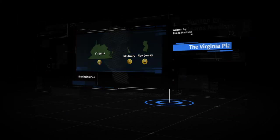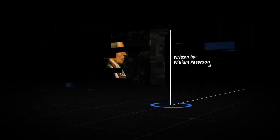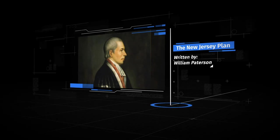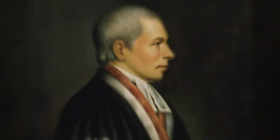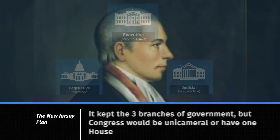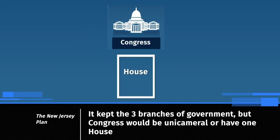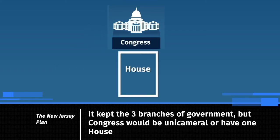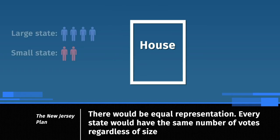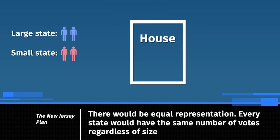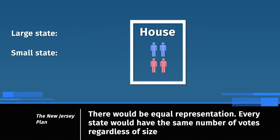Two weeks after the Virginia Plan was presented, William Patterson presented the New Jersey Plan. This plan kept the three branches of government but said Congress would be unicameral, meaning it would have one house, and there would be equal representation — every state would have the same number of votes, regardless of size.